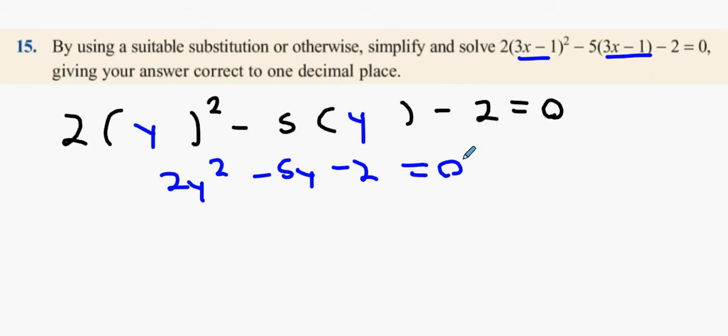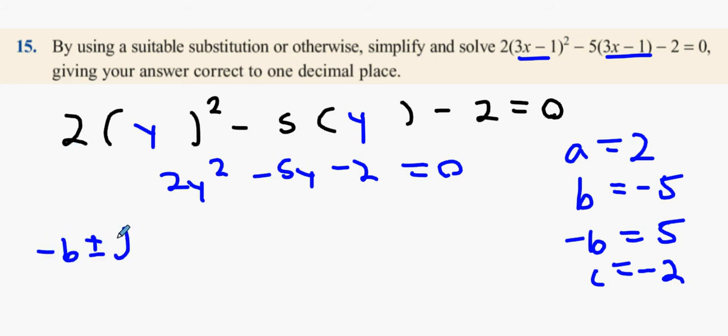The reason why I did that is I'm going to have to say A equals 2. B equals minus 5, minus B equals plus 5. C equals minus 2. Can't do the minus B formula, which we're all very familiar with. Okay, next I'm going to fill out this minus B formula.